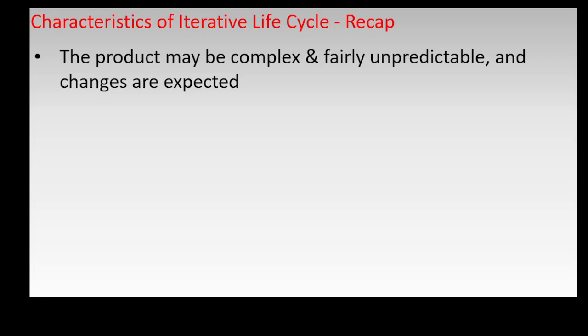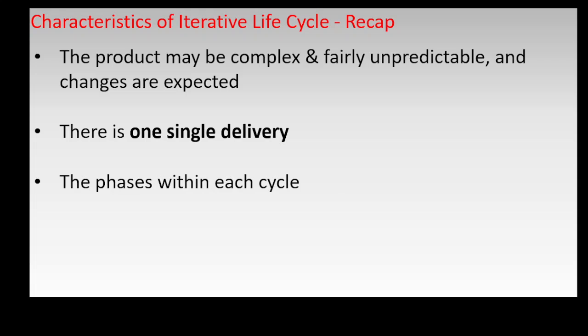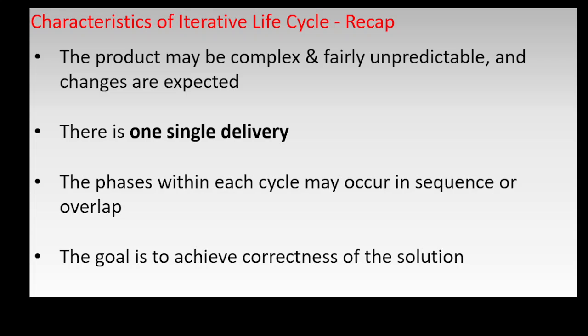The characteristics of the iterative life cycle include: the product may be complex and fairly unpredictable, and changes are expected. There is one single delivery. A project is completed in several small cycles. Product versions or prototypes are created and refined in each cycle up to the last cycle, when the final version is delivered. The phases within each cycle may occur in sequence or overlap, and the goal is to achieve correctness of the solution.